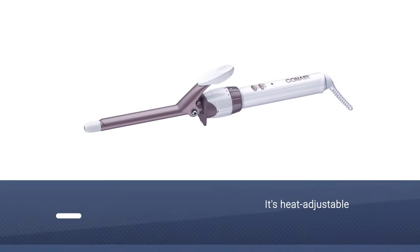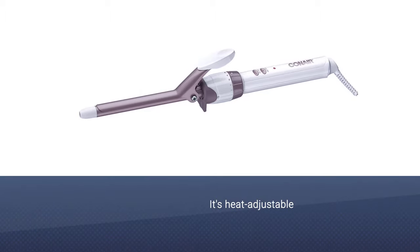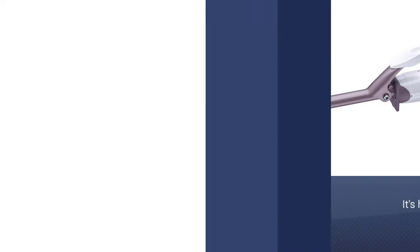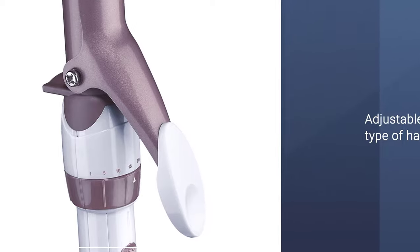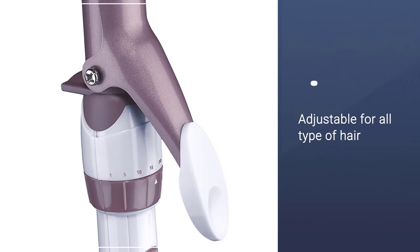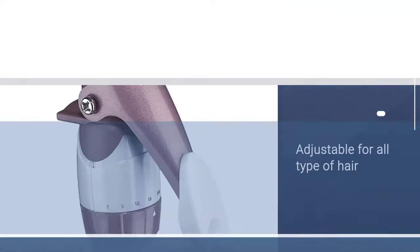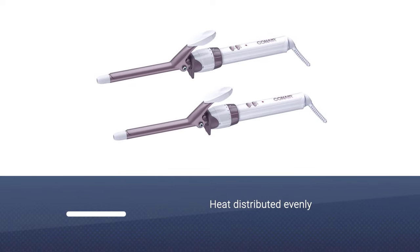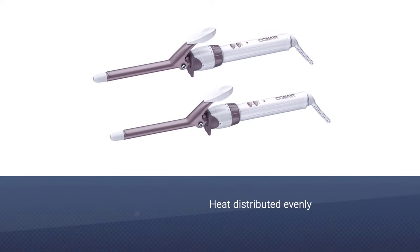It's heat adjustable so that you can turn it down low for finer hair and up for thicker, more coarse hair. The ceramic barrel eliminates frizz, adds shine, and allows heat to be distributed evenly so you can achieve consistent curls or waves with overall less damage to each section.